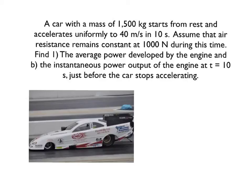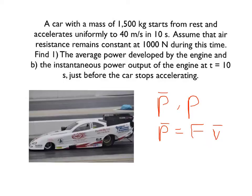We're going to calculate P-average, written as P with a line over it, and also P-instantaneous, written as just P. P-average is defined as the force output by the vehicle times the average velocity, and P-instantaneous is the force times the instantaneous velocity.